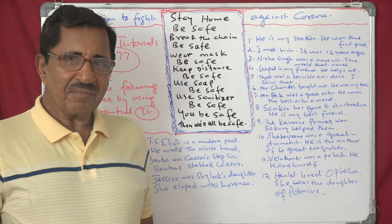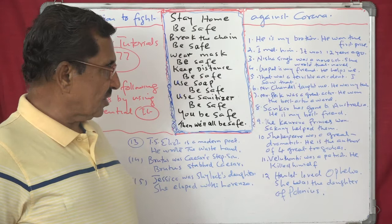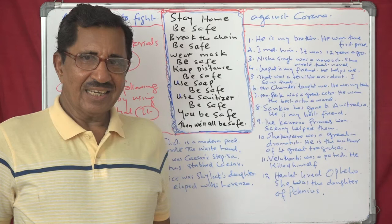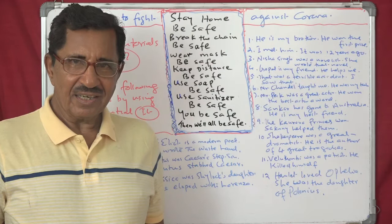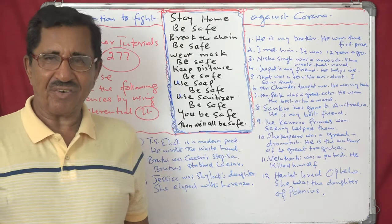Eighth one — 'Chandler has gone to Australia. He is my best friend.' Combined: 'It is Chandler, my best friend, who has gone to Australia.'